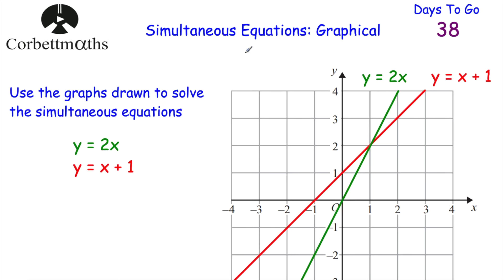Today we're looking at how to solve simultaneous equations graphically. We've already looked at solving them using elimination and substitution for non-linear simultaneous equations. Now we're going to look at the graphical method. Here we've got two straight line graphs: y equals 2x and y equals x plus 1. We've been asked to use the graphs to solve these simultaneous equations. To find the solutions, all we need to do is find where the graphs intersect.